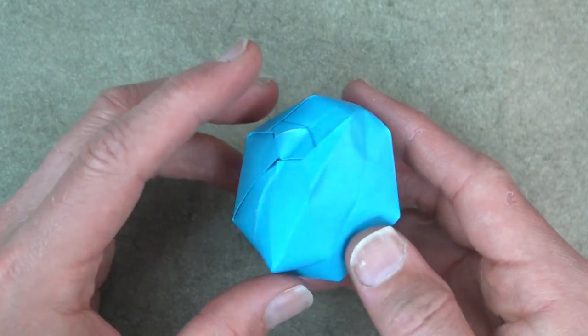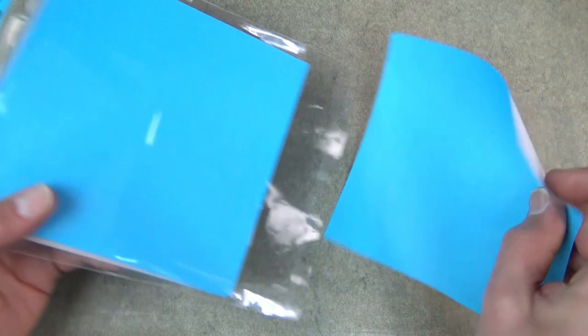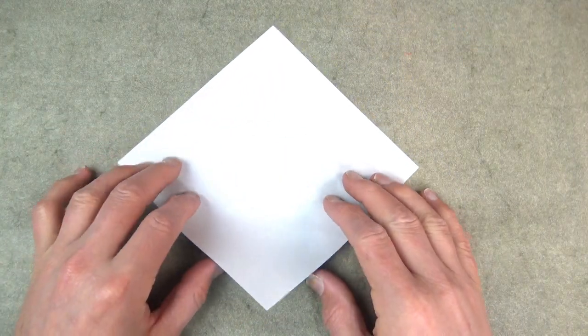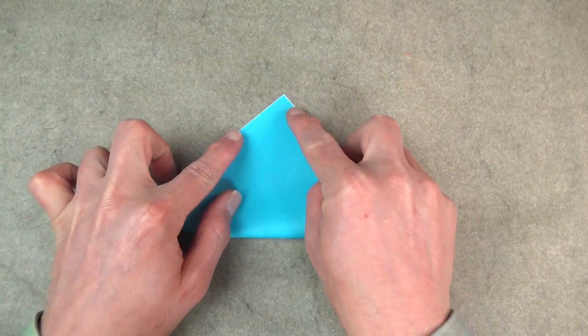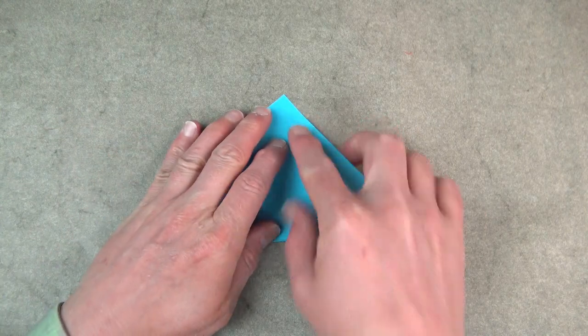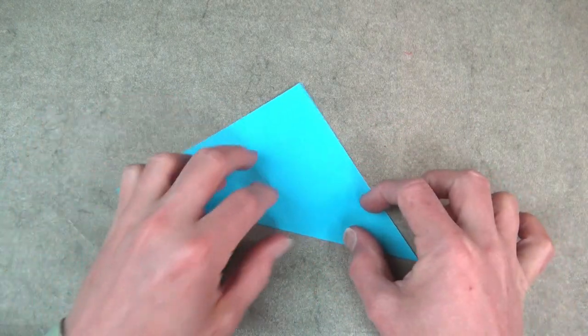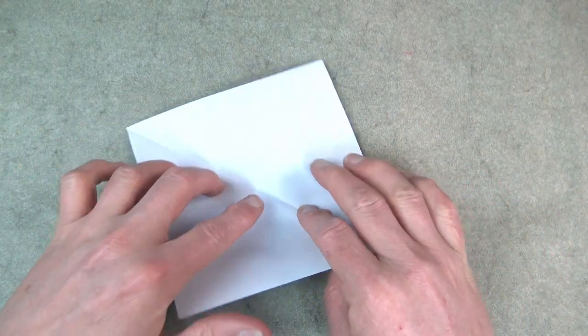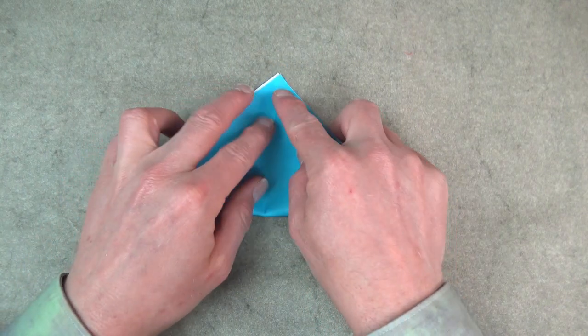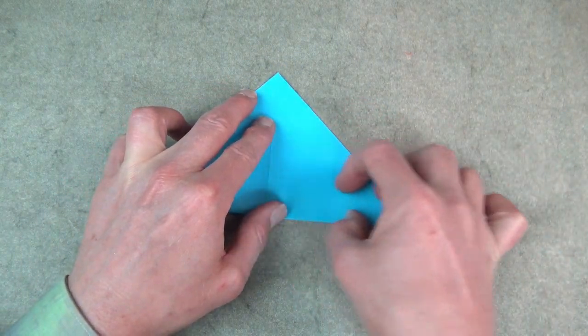Alright, so for this Easter egg I'm going to use a six inch square of kami. Begin white side up and fold diagonally in half, try to make really precise folds and crease sharply. Unfold, rotate and fold in half in this direction. We're making a water bomb base.